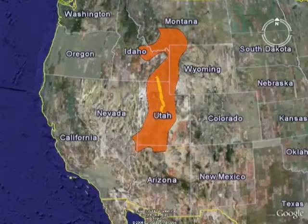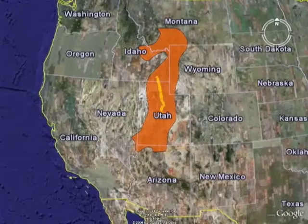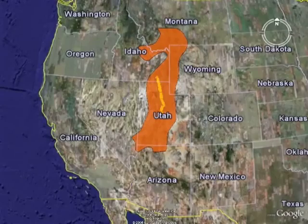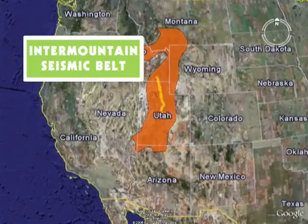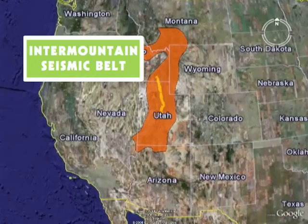Although most earthquakes occur near plate boundaries, there is an area of increased earthquake activity within the interior of the North American Plate, known as the Intermountain Seismic Belt. The belt extends 800 miles from Montana to Nevada and Arizona.